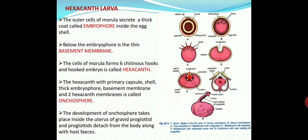The development of the egg up to the formation of the onchosphere takes place inside the uterus of the gravid proglottis, and further development is not possible inside the host body. The gravid proglottis detaches from the body of the parasite and comes out along with the host's feces. These infect the secondary host when a pig feeds upon the contaminated feces.